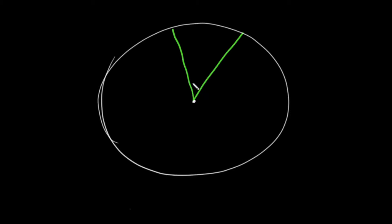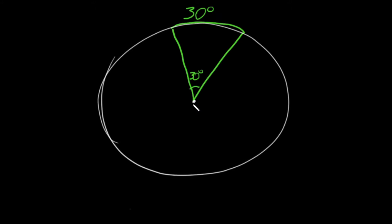The relationship between this central angle and the arc that it intercepts is that they are congruent — they are equal to each other. So if the central angle was 30 degrees, then the arc that it intercepts is also 30 degrees. If you want more practice with central angles, we'll have a video out on that soon.